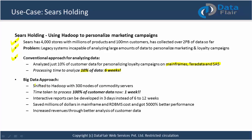They shifted to big data — specifically a 300-node Hadoop community cluster with commodity servers. Now, 100% of customer data is processed in merely 1 week. Compare: 10% in 6 weeks versus 100% in 1 week. Additionally, interactive reports can now be developed in 3 days instead of 6 to 12 weeks.